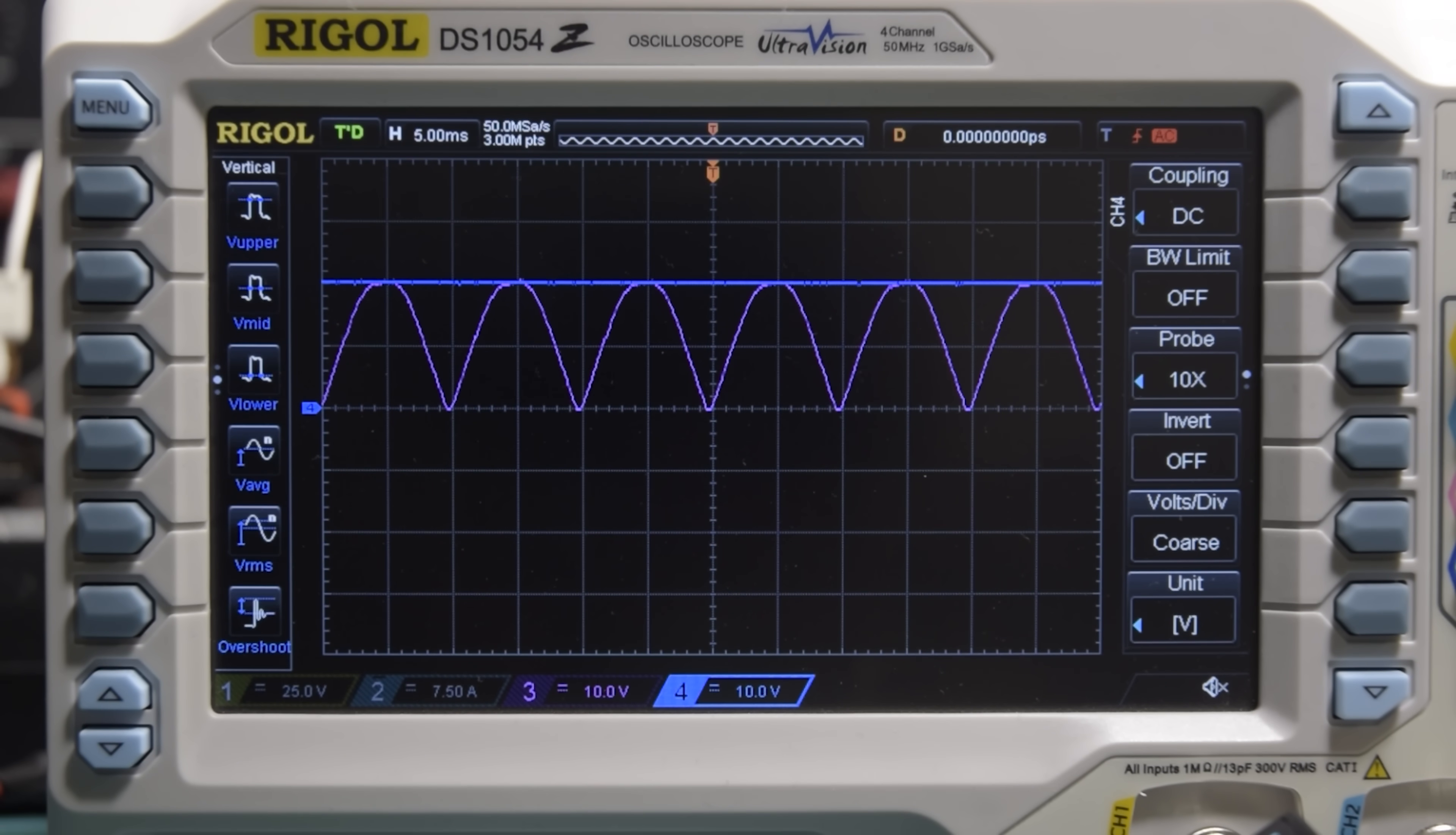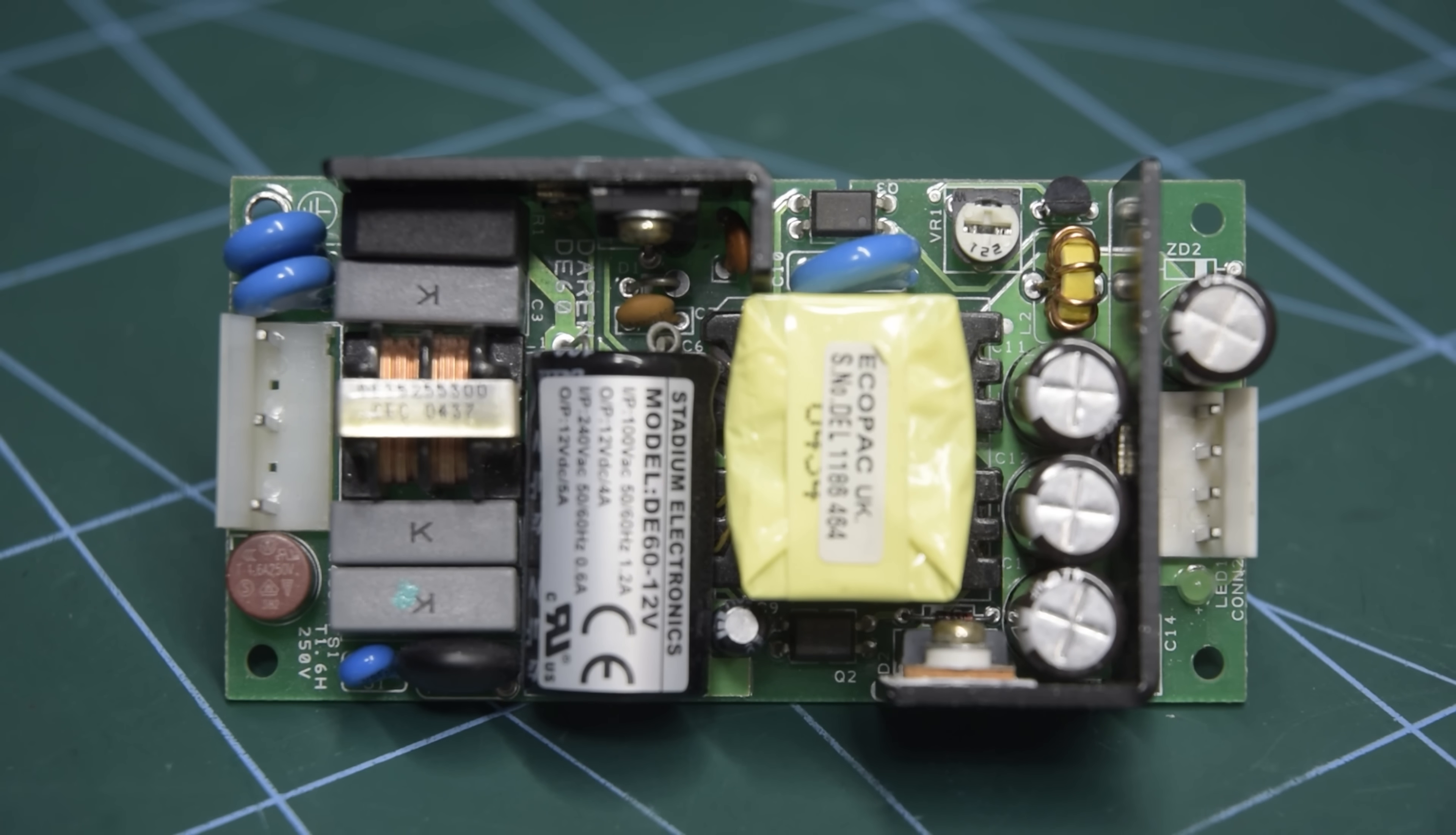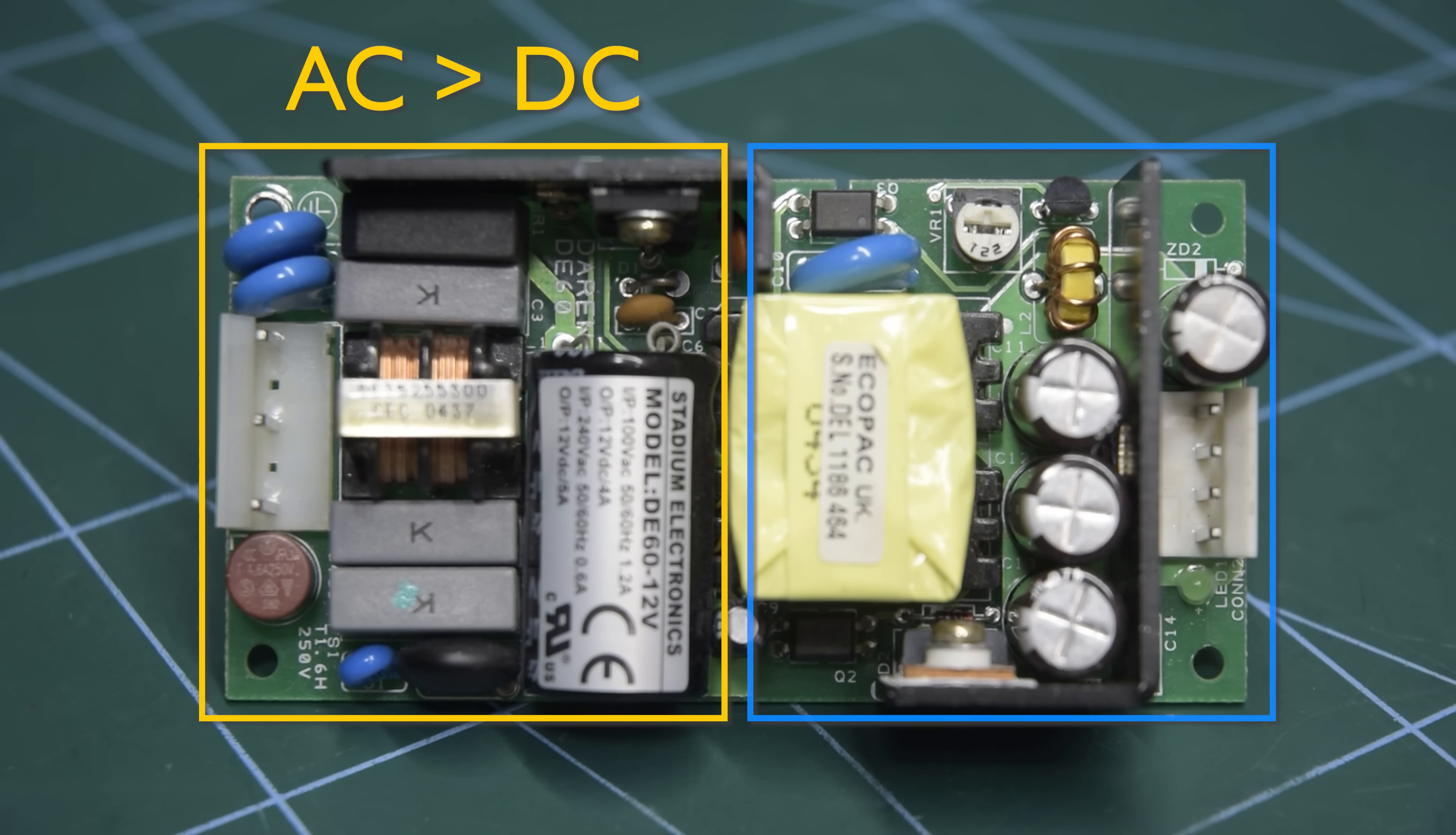The problem comes when you're driving a load that needs a smooth DC voltage, which is almost all modern loads. By far the most common these days are isolated DC to DC converters. This is how pretty much all modern power supplies work, first converting mains AC to DC, and then changing the voltage and adding in some isolation, with a much smaller and more efficient DC to DC converter.